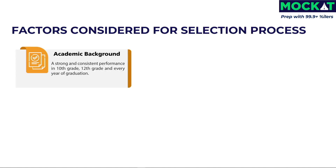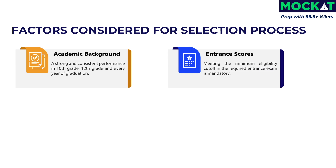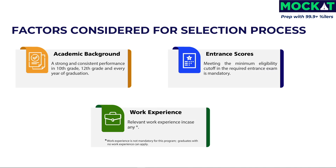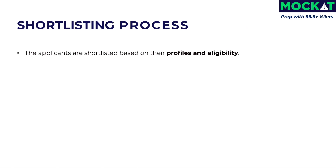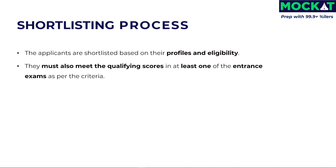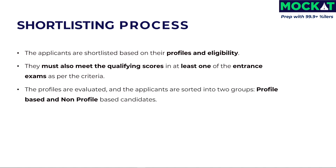Factors considered for the selection process: Academic background — a strong, consistent performance in 10th and 12th grade is very important. Entrance scores — meeting the minimum eligibility cutoff in a required entrance exam is mandatory. Work experience — if you have work experience you can include it, but it is not mandatory for this program. For shortlisting, applicants are evaluated based on their profiles and entrance exam scores in at least one of CAT, XAT, GMAT, or CMAT. Profiles are sorted into two groups: profile-based and non-profile-based. Candidates with very high entrance exam scores are considered non-profile-based, while candidates with good work experience and background but lower scores are considered profile-based. Candidates will undergo a critical thinking test and personal interview on the day of the admission process.